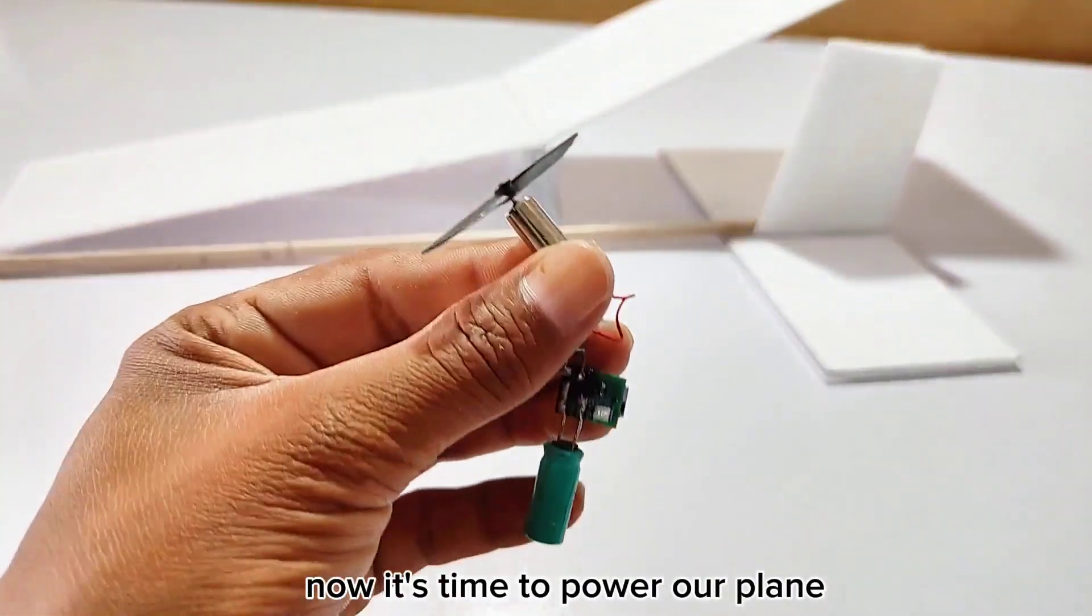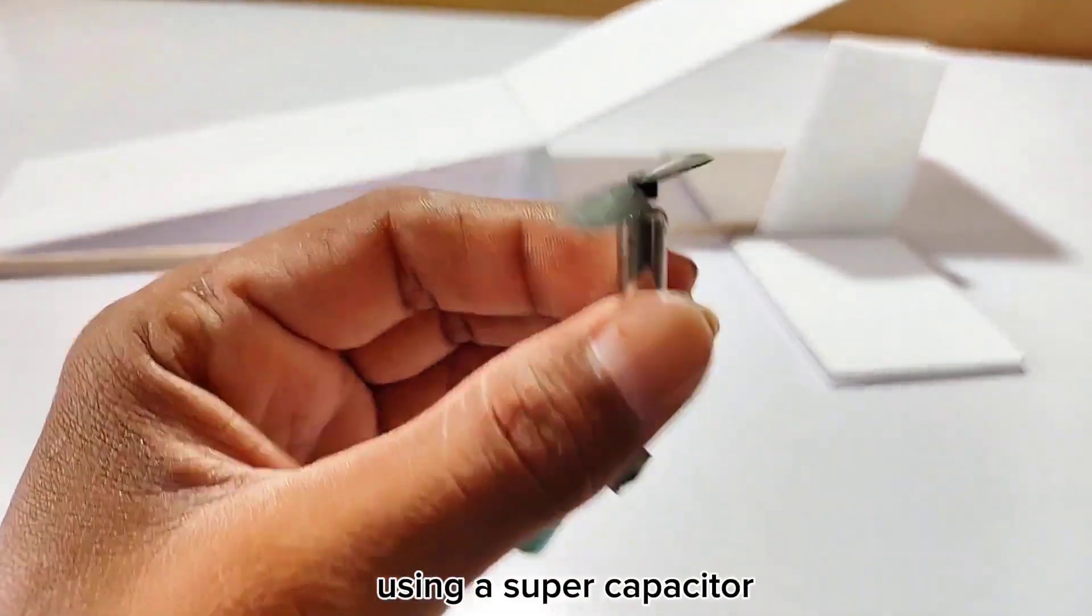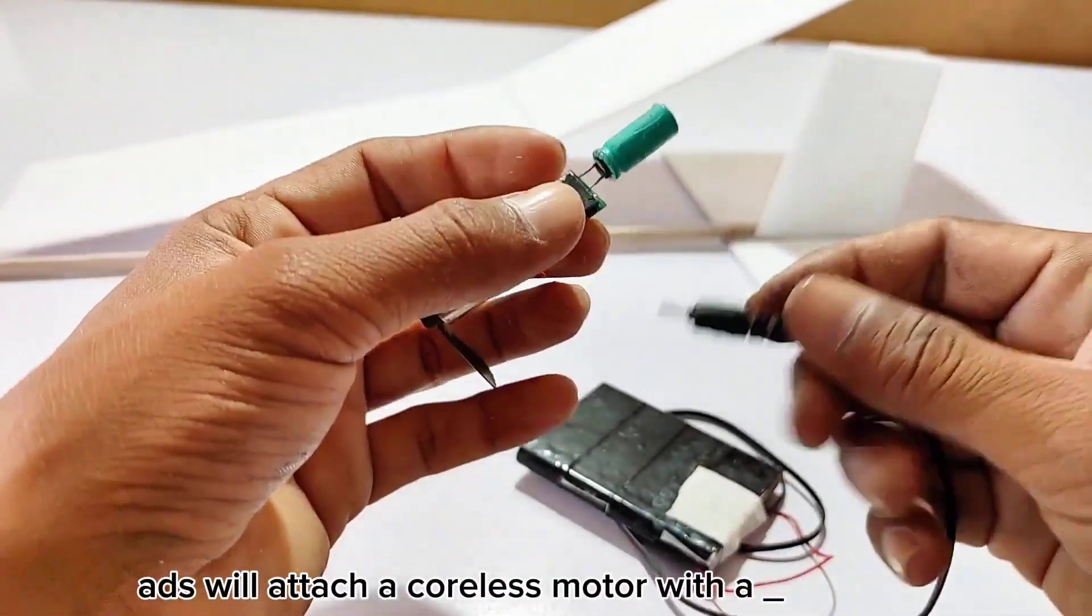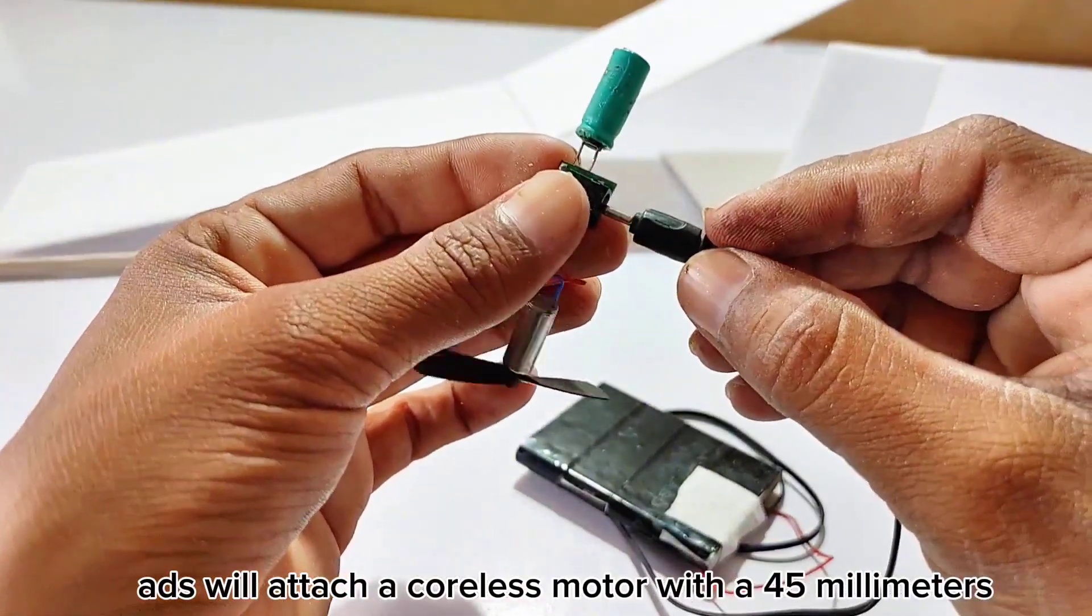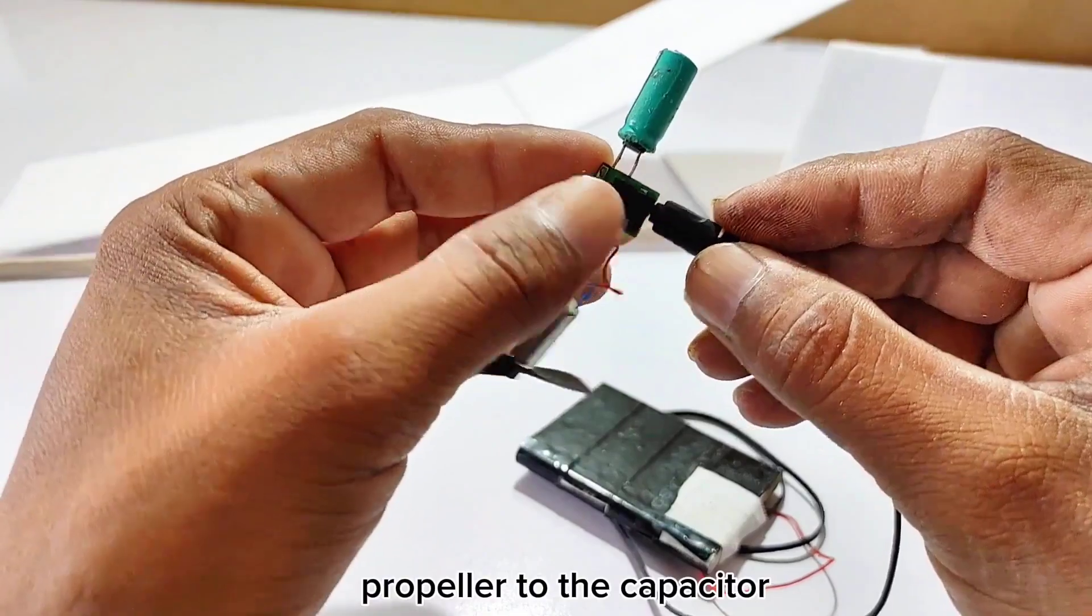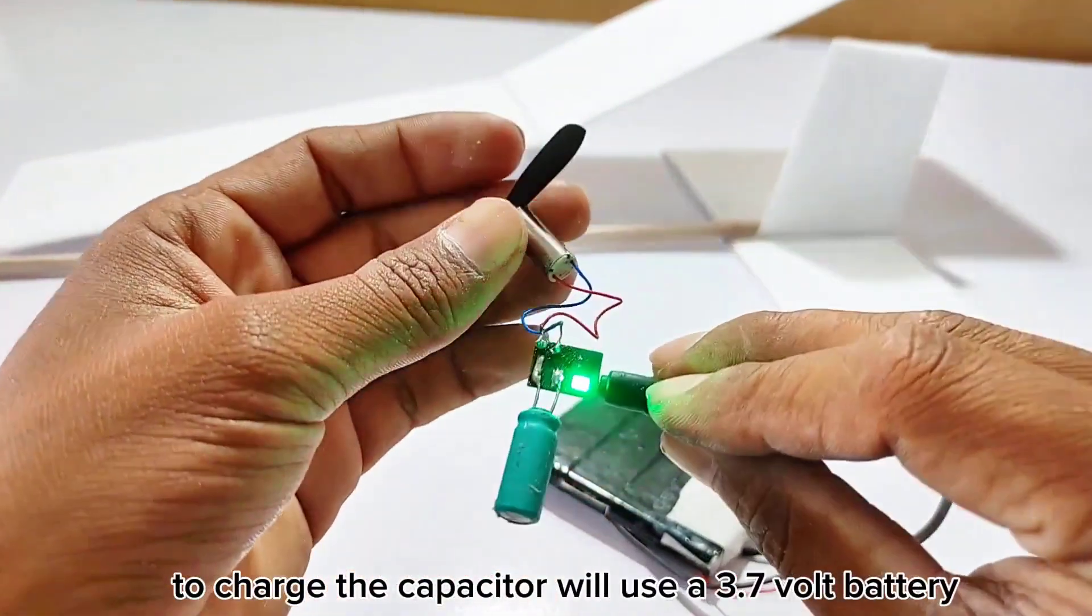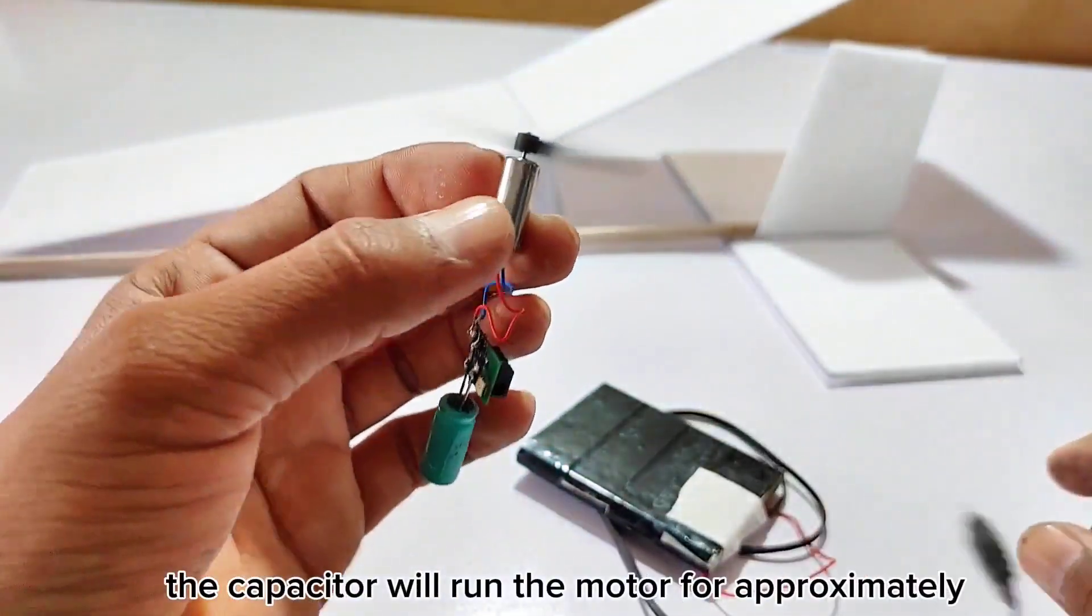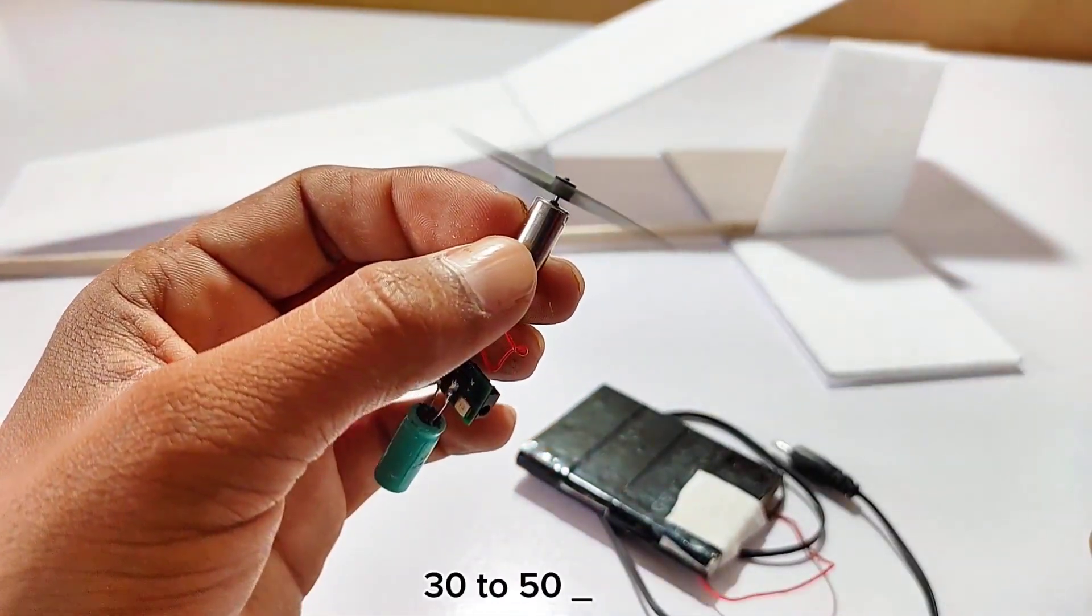Now, it's time to power our plane using a super-capacitor, which has a voltage of 2.7 volts and a capacitance of 10 farads. We'll attach a coreless motor with a 45mm propeller to the capacitor. To charge the capacitor, we'll use a 3.7-volt battery. Once charged, the capacitor will run the motor for approximately 30 to 50 seconds.